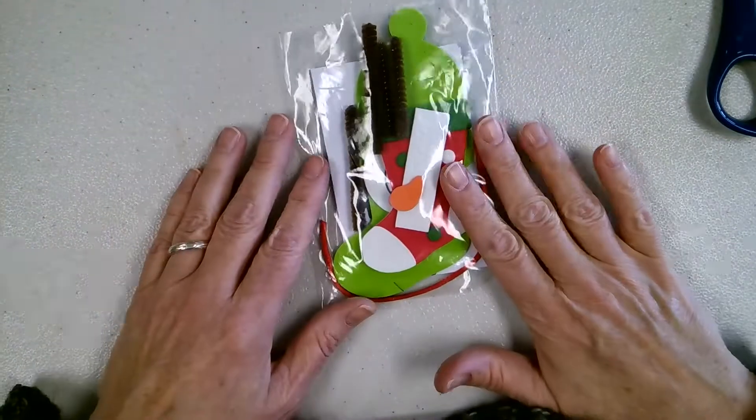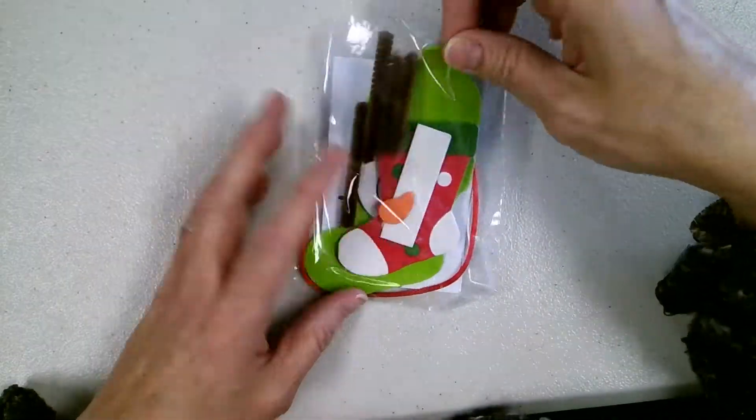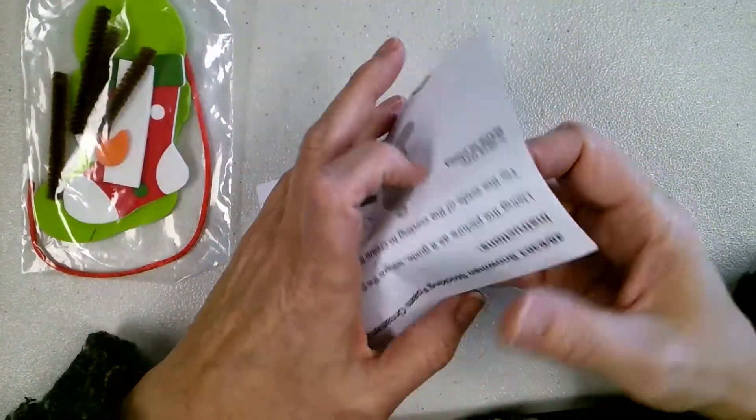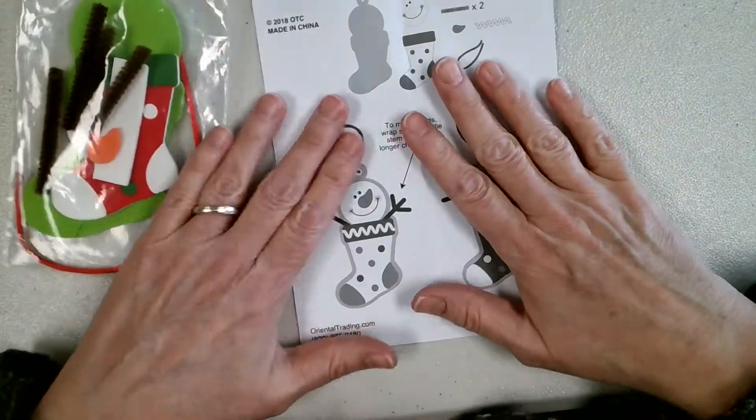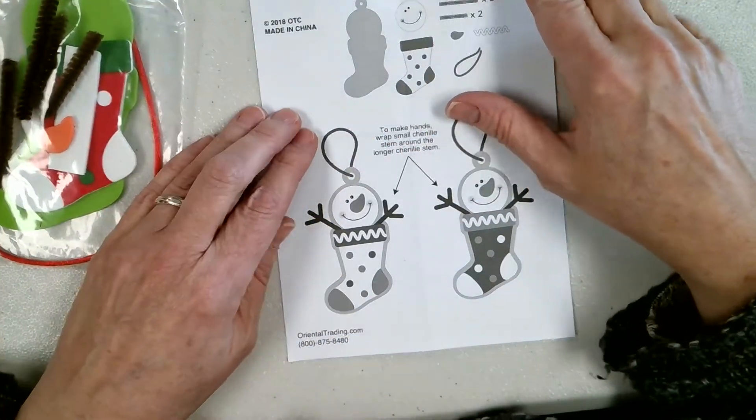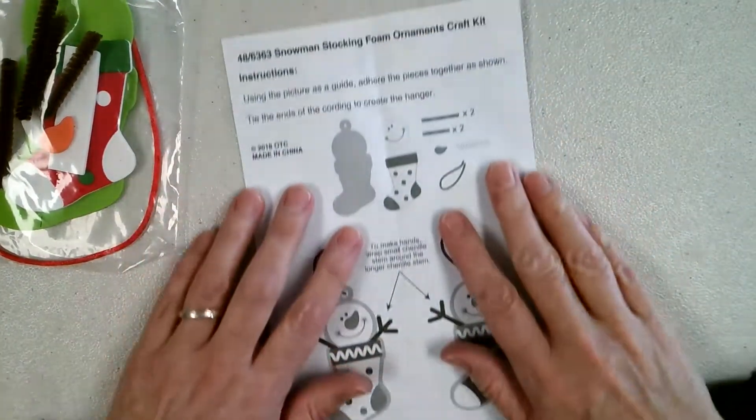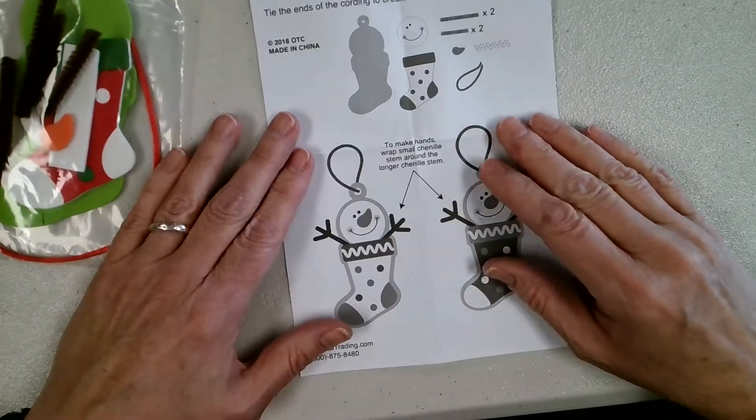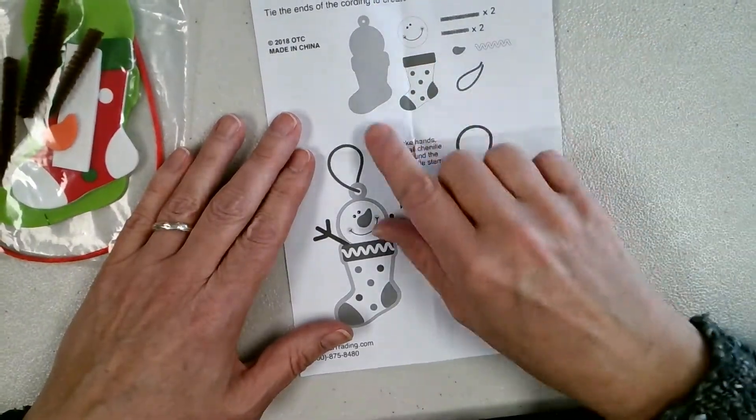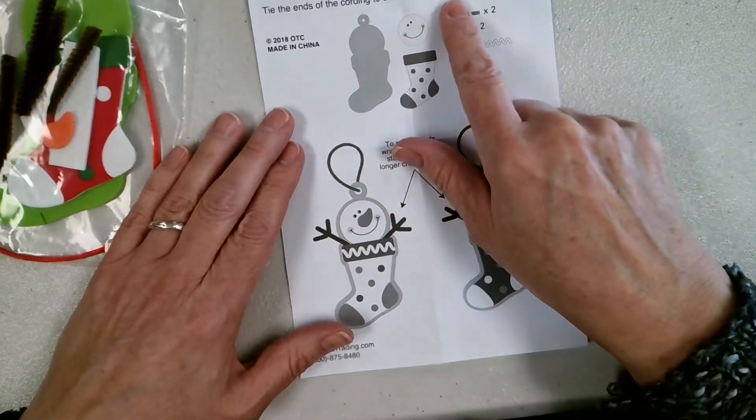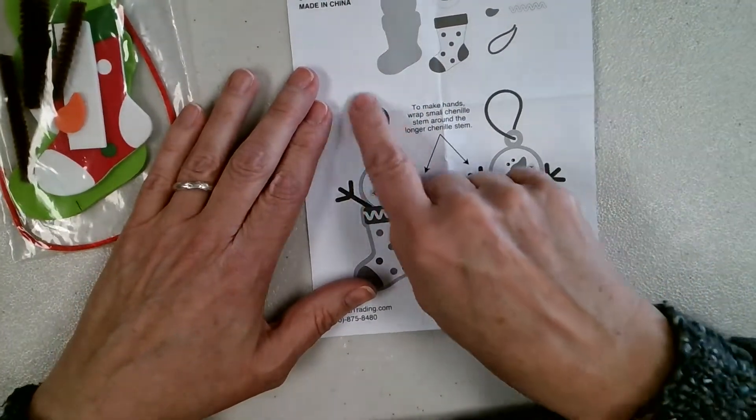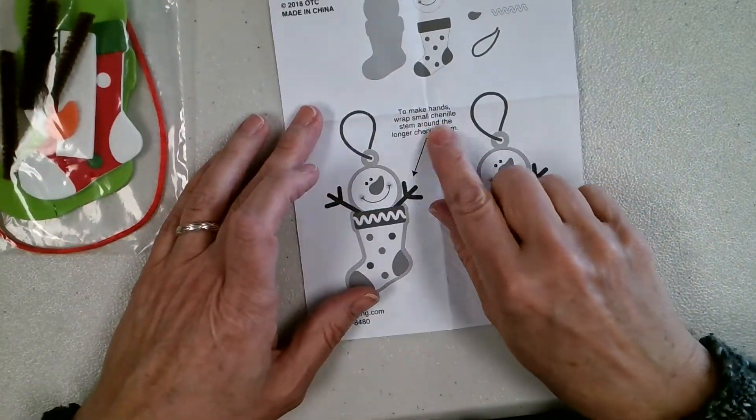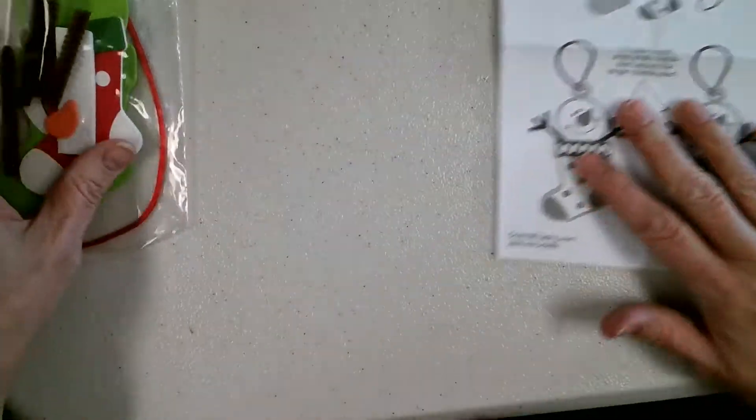Now let's take a look at this lovely little bag here. It comes with instructions. Snowman Stocking Foam Ornament Craft Kit. Using the picture as a guide, adhere the pieces together as shown. Tie the ends of the cording to create the hanger. To make the hands, wrap small chenille stem around the longer chenille stem. So let's start with that.